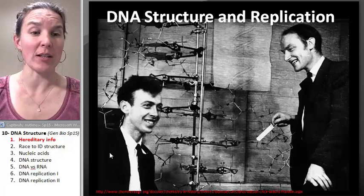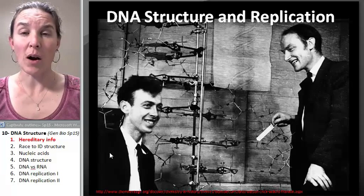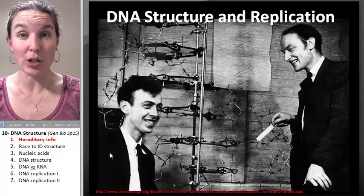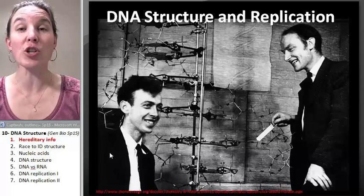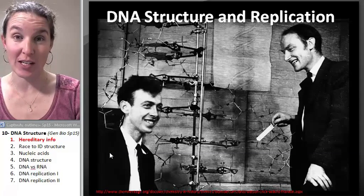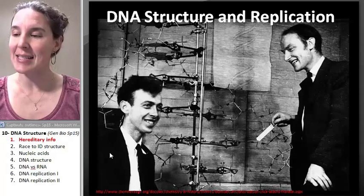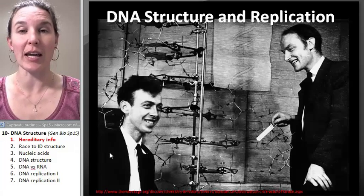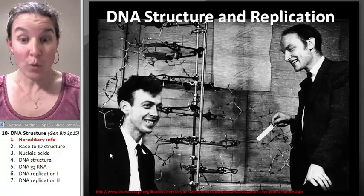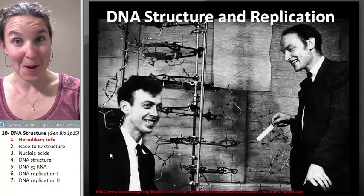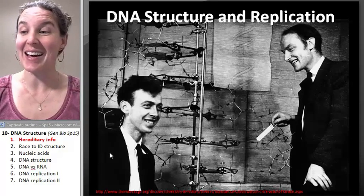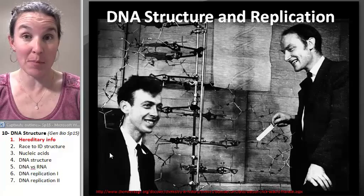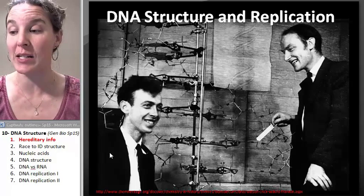It carries all the information in it that makes you who you are. But it wasn't that long ago that people — scientists — really weren't sure if it was DNA or if it was protein that carried the hereditary information. They did know that it was carried in the chromosomes. However, when we start looking at what chromosomes are made out of, chromosomes actually have proteins in them. So it makes sense that we would still have confusion — it might be the protein in the chromosome that is responsible for hereditary information.